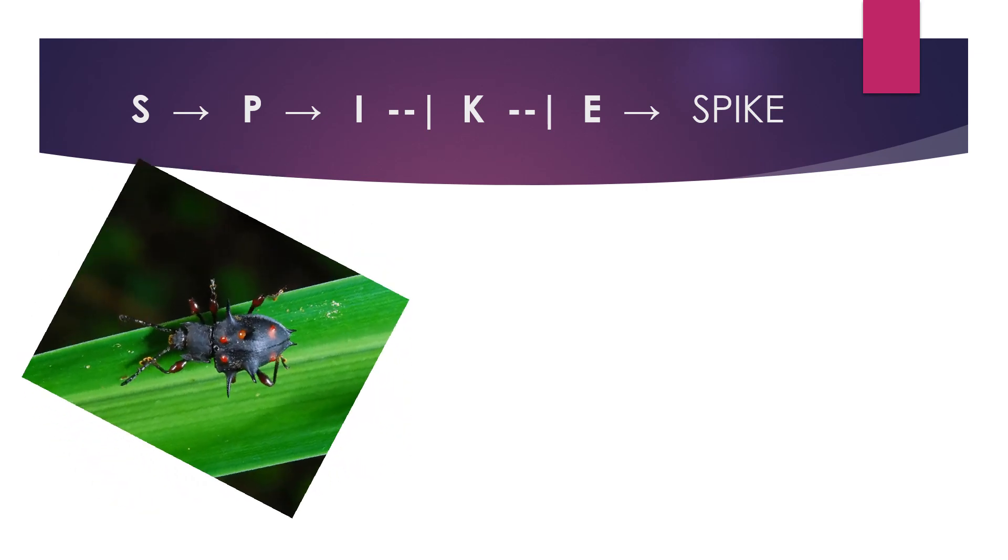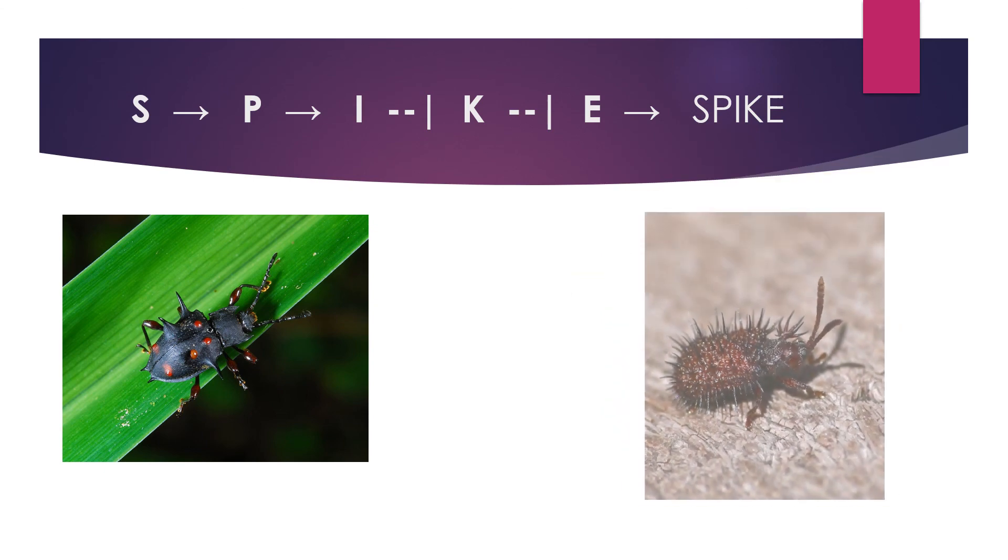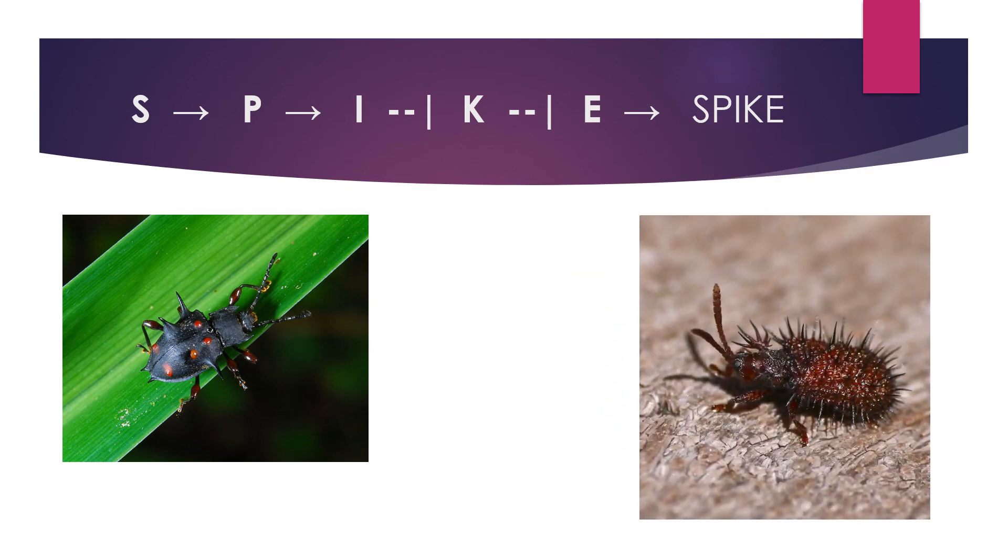The extent of spikes on a beetle may be caused by variability and expressivity, as some may have more spikes than others.